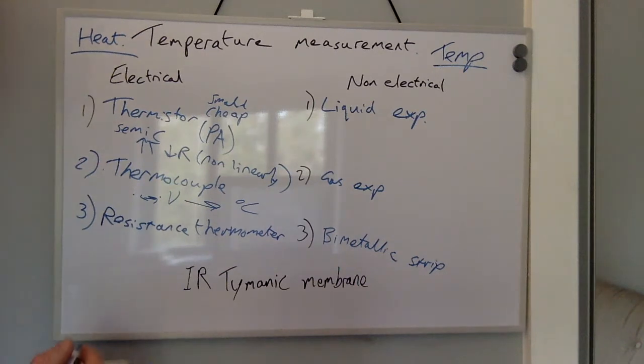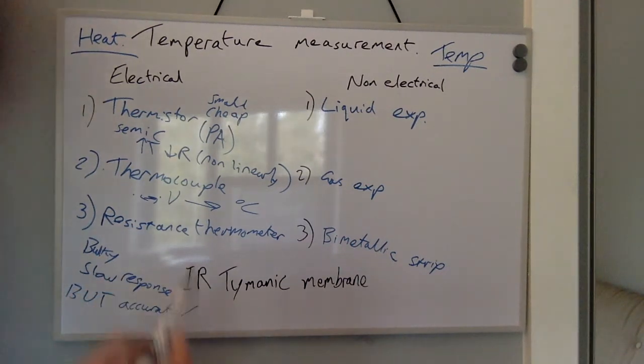Resistance thermometers are bulky and have a slow response time, but extremely accurate. The resistance thermometer works on the principle of a platinum wire.